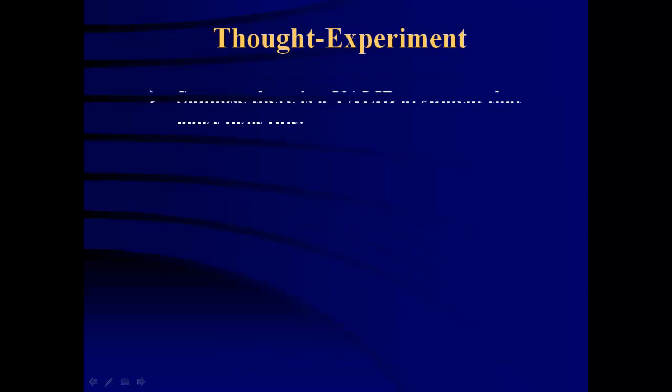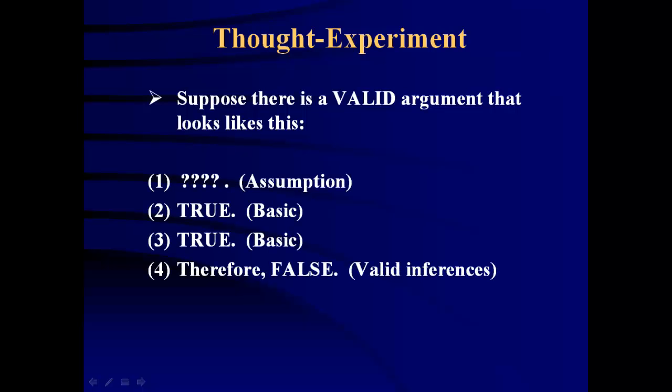Consider this thought experiment. Suppose you had a valid argument, you knew it was valid, and it looks like this: here we have a set of premises, three for one conclusion, and all of the inferences were valid. So, no WTF, no possible situation in which all of the premises are true while the conclusion is false.